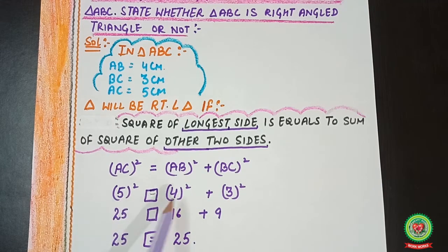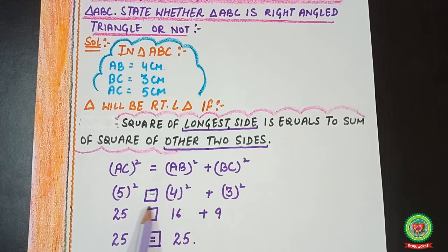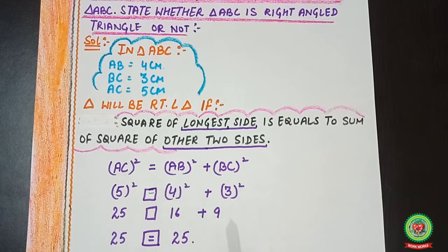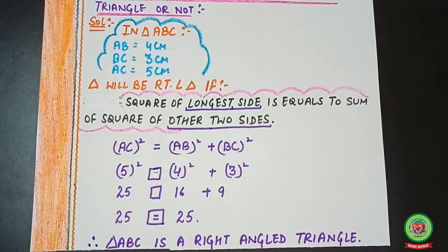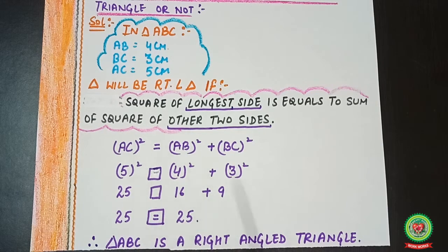Now putting in the values: 5² ? 4² + 3². We use a box symbol because we need to verify whether LHS equals RHS. So 25 ? 16 + 9. That gives 25 = 25. Right hand side equals left hand side, therefore triangle ABC is a right angled triangle.